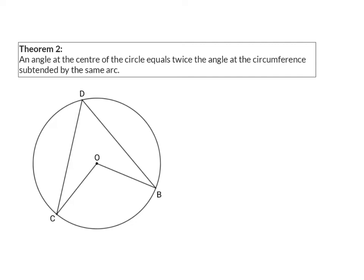If we look at the important words, they start with an angle at the center. In our example, this will be the angle COB. This angle will be twice the angle at the circumference, which will be angle D, subtended by the same arc.